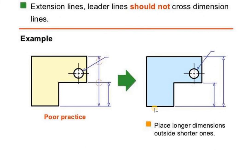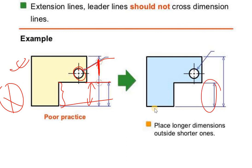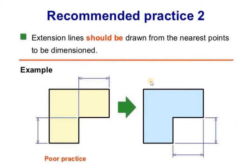For dimension placement, the dimension line should not be crossed incorrectly. Crossing a dimension line is wrong; however, crossing an extension line is acceptable. The dimension line should not be cut. Extension lines should be drawn from the nearest points of the feature to be dimensioned.